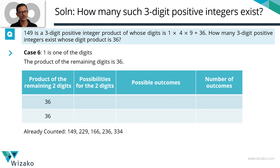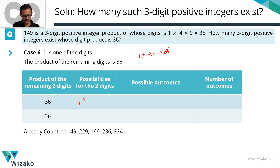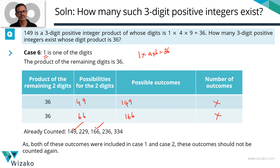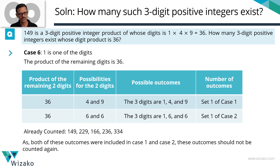Case 6: one of the digits is 1. The product of the remaining two must equal 36. Single-digit pairs: 1×36 and 2×18 are ruled out; 4×9 is valid, giving digits 1, 4, 9 — already counted. 6×6 is valid, giving digits 1, 6, 6 — also already counted. So Case 6 adds nothing new. Cases 4, 5, and 6 contribute zero additional numbers.